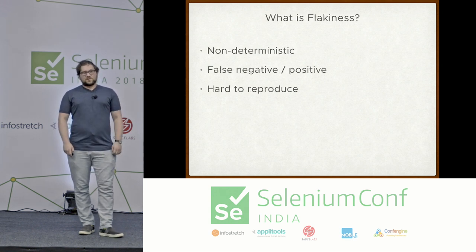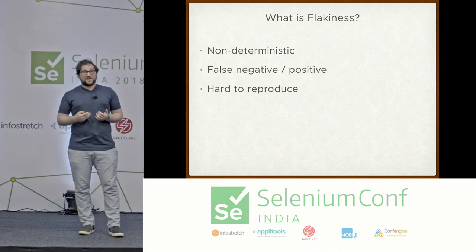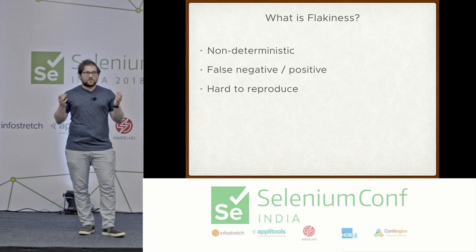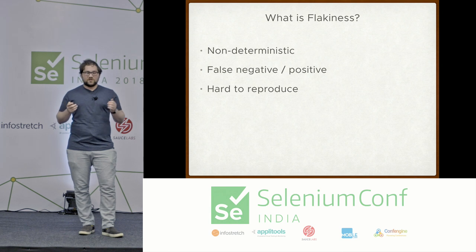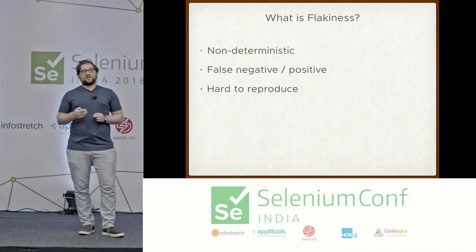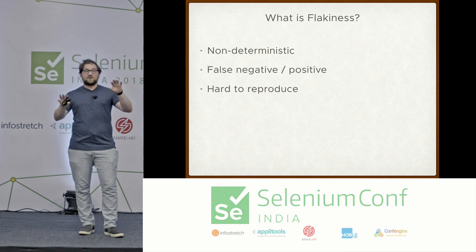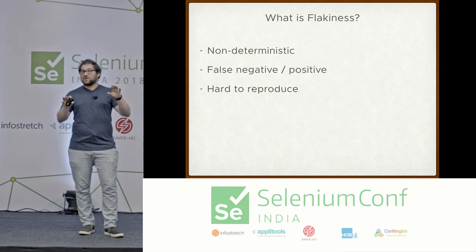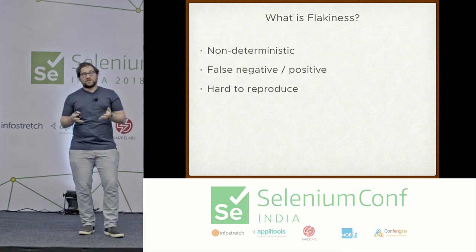Before I get into the tools, I'll describe what I think flakiness is. For me, the first thing is non-determinism: if I have the same application under test and the same test script, and I run it ten times — nine times it passes but one time it fails — nothing has changed in the ecosystem, but a failure has been reported. That's non-deterministic.